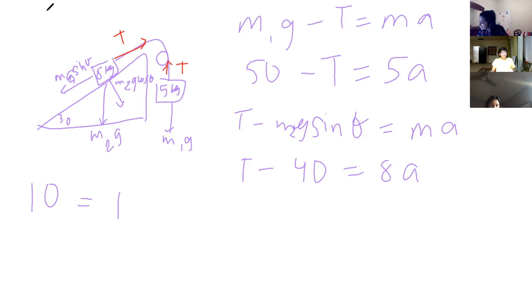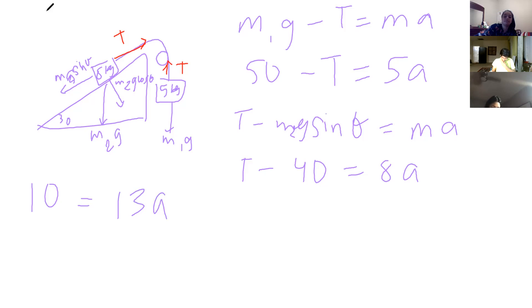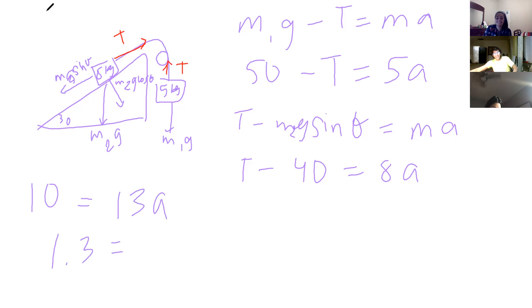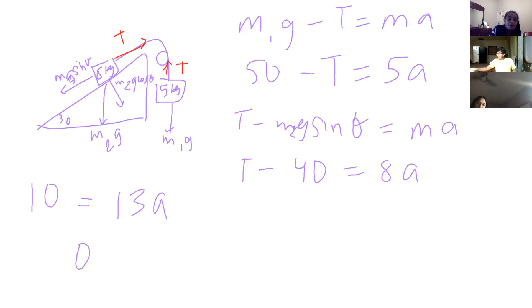10 equals 13a, so a equals 10 divided by 13. That's not 1.3 — it's 0.77 m/s². Let me rely on the calculator. Yes, 0.77 m/s².